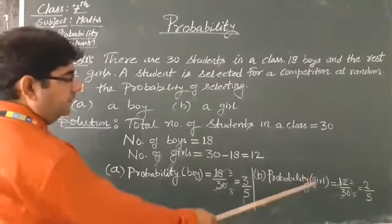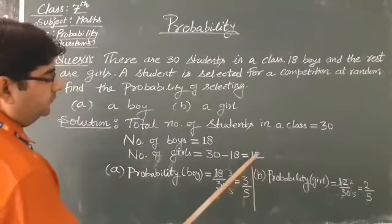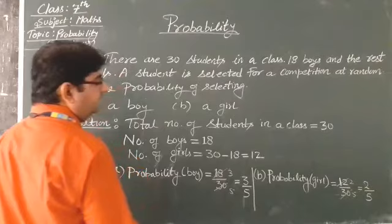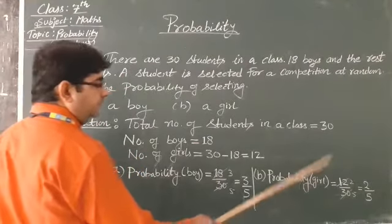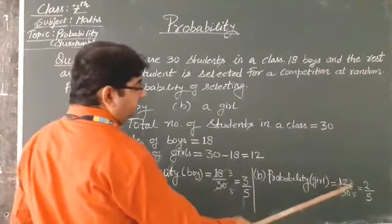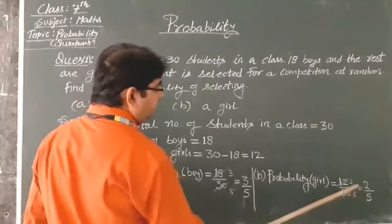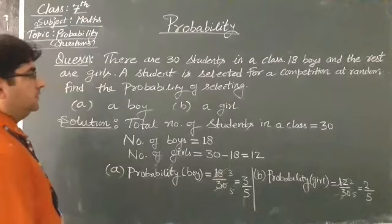Now, probability of getting a girl. Girls are 12, of course, and total is 30. So 12 upon 30 is the probability of selecting a girl. Now, 12 and 30 both are divisible by 6, so we get 2 by 5. So 2 by 5 is the probability of selecting a girl.